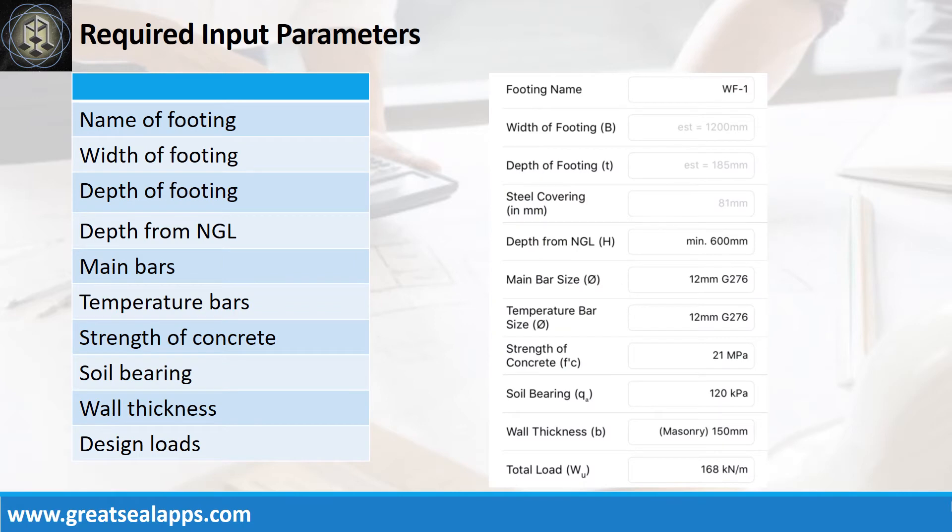Enumerate input parameters required. Footing name, WF1. Depth from natural grade line, 600mm. Main bars, 12mm bar at grade 276. Temperature bars,